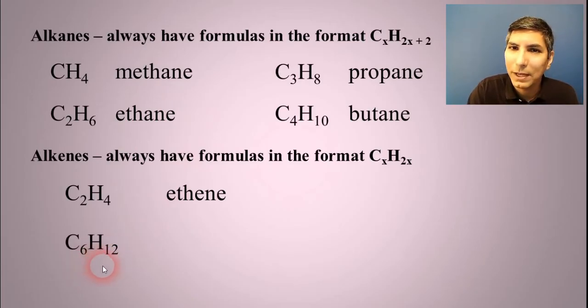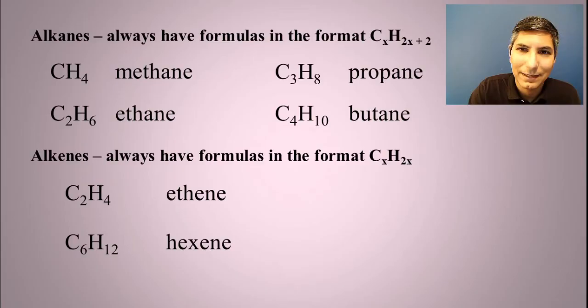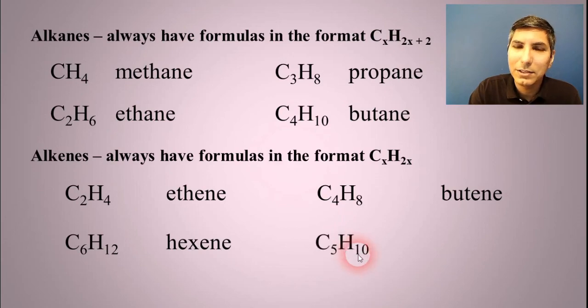C6H12, got that same format there. Six is hex, so this is called hexene. I see the pattern. How about C4H8? Same CxH2x. It's an alkene. So four carbons would be but. So that's called butene. C5H10, same pattern. We've got five carbons. That's pent. So this compound is called pentene.